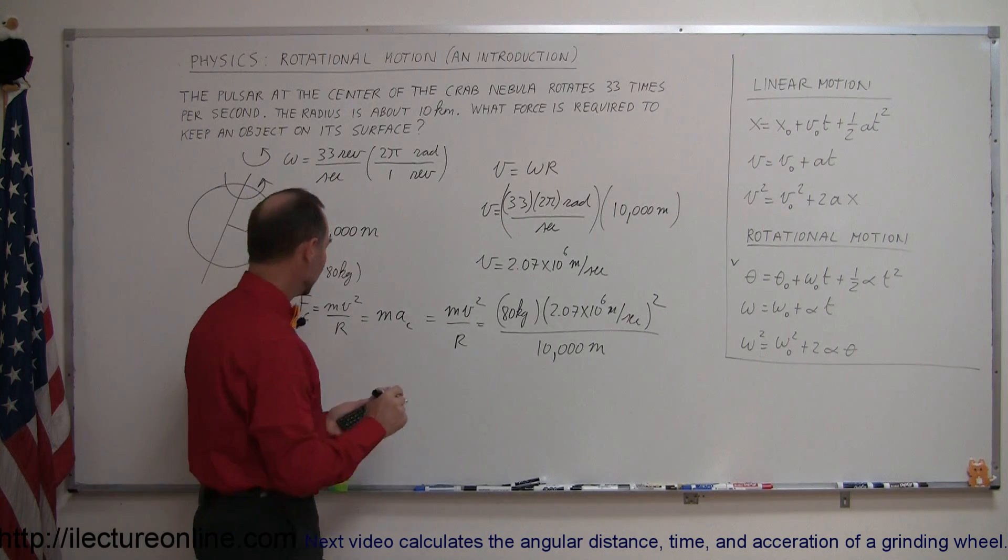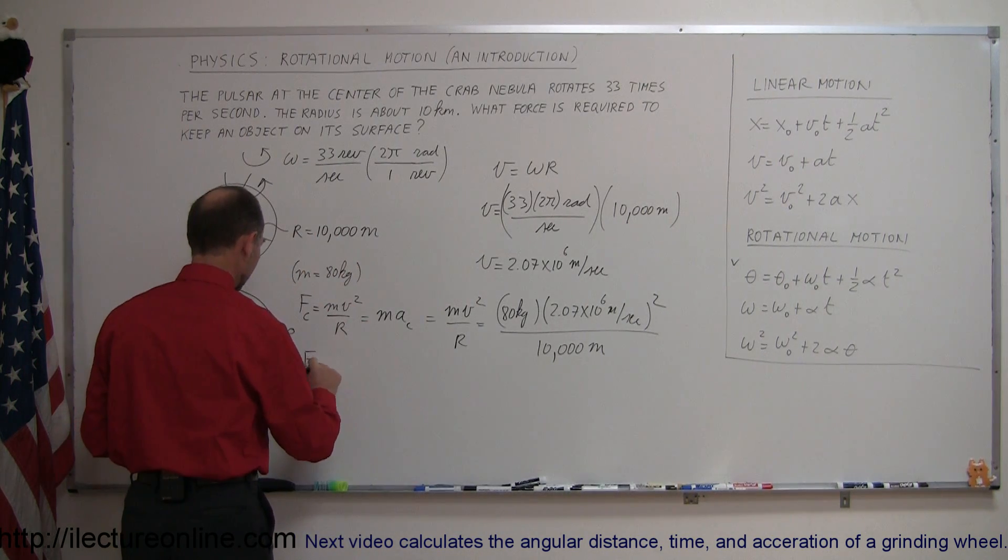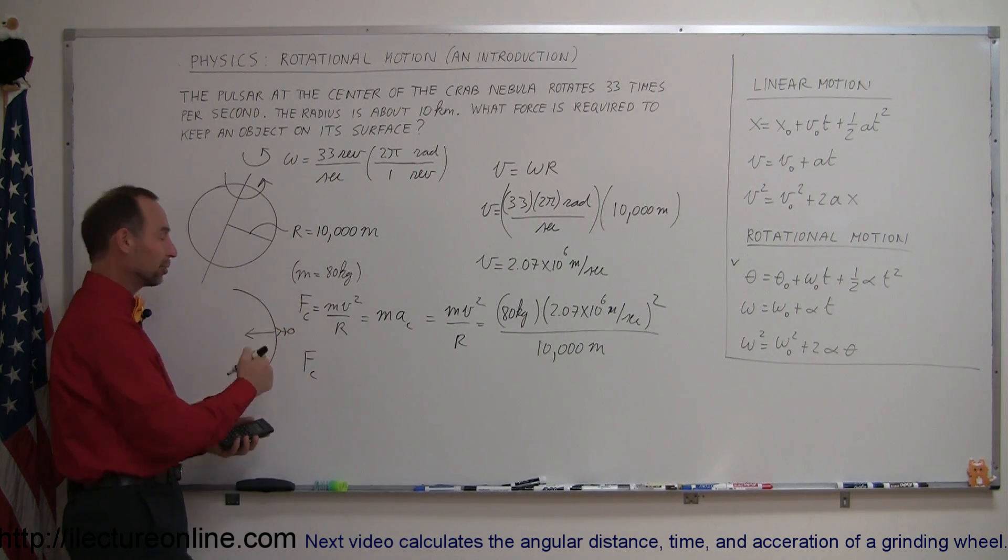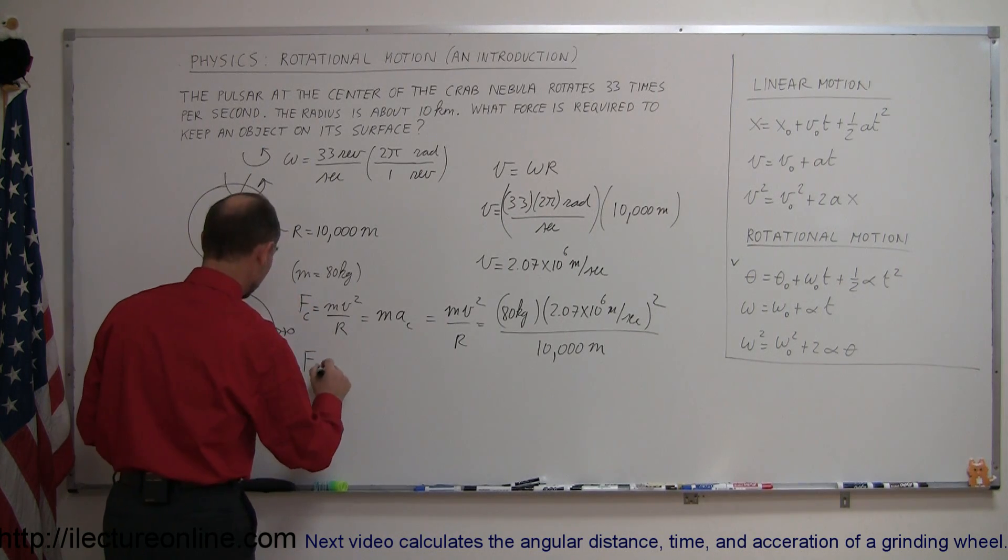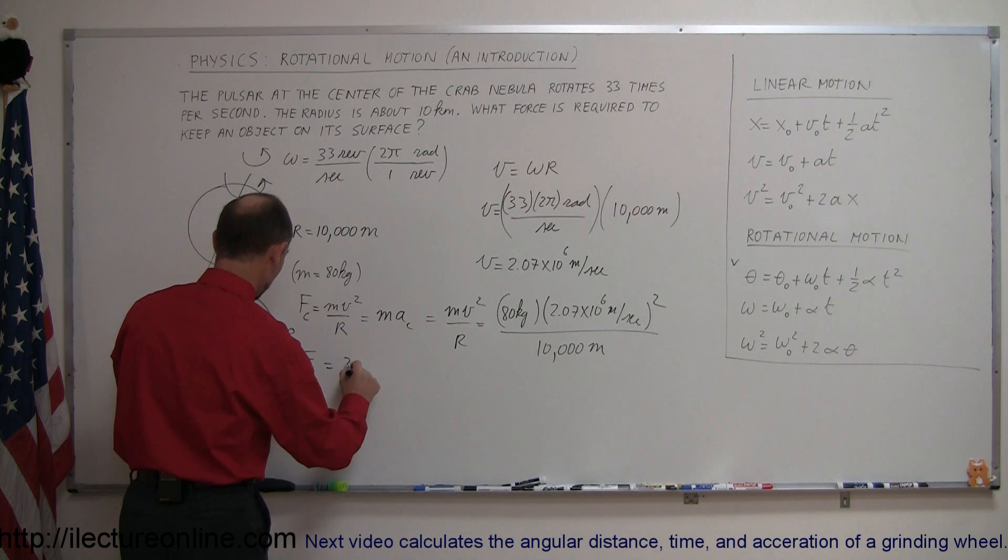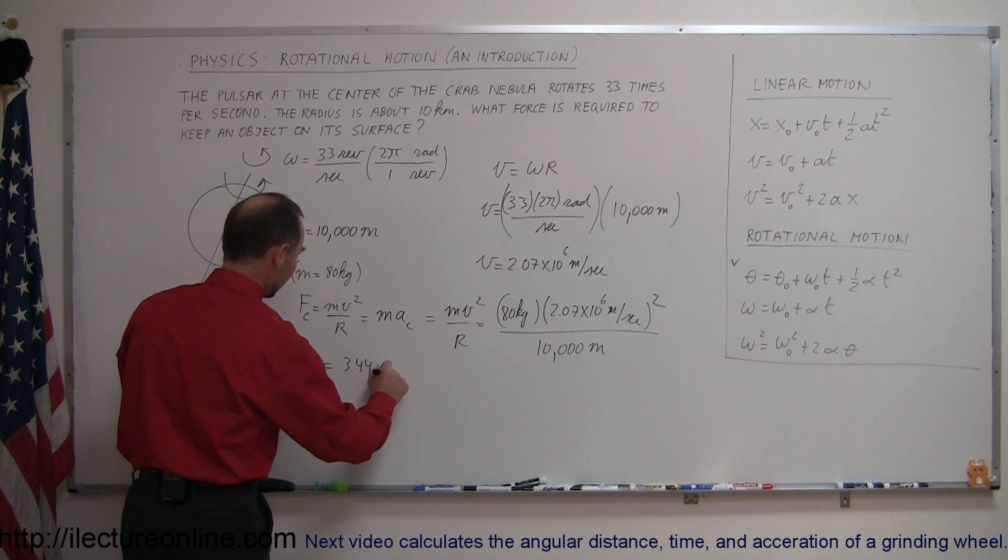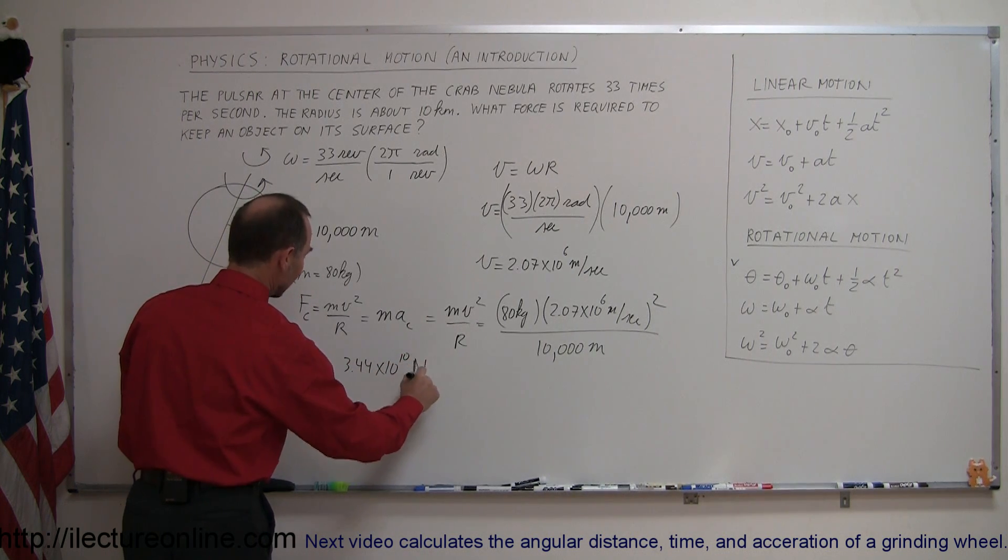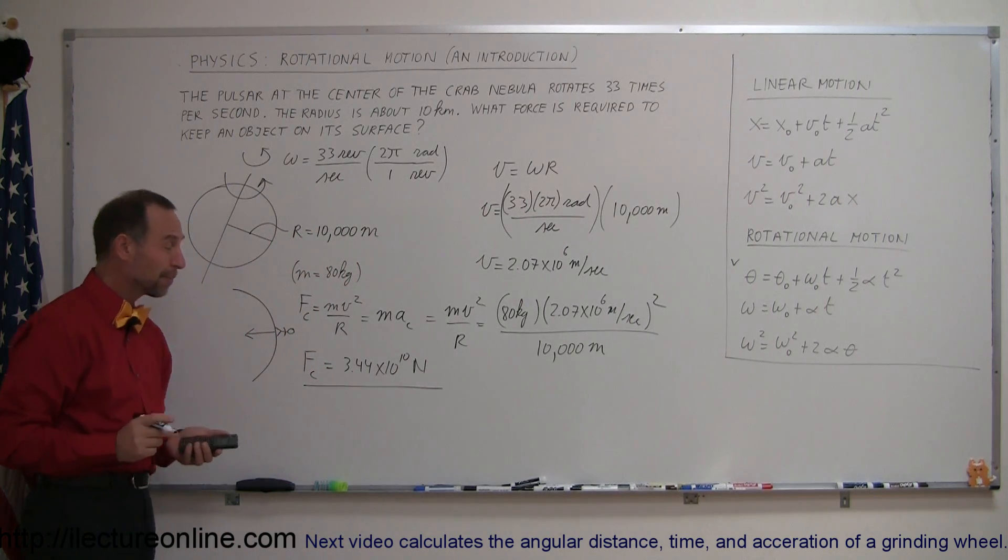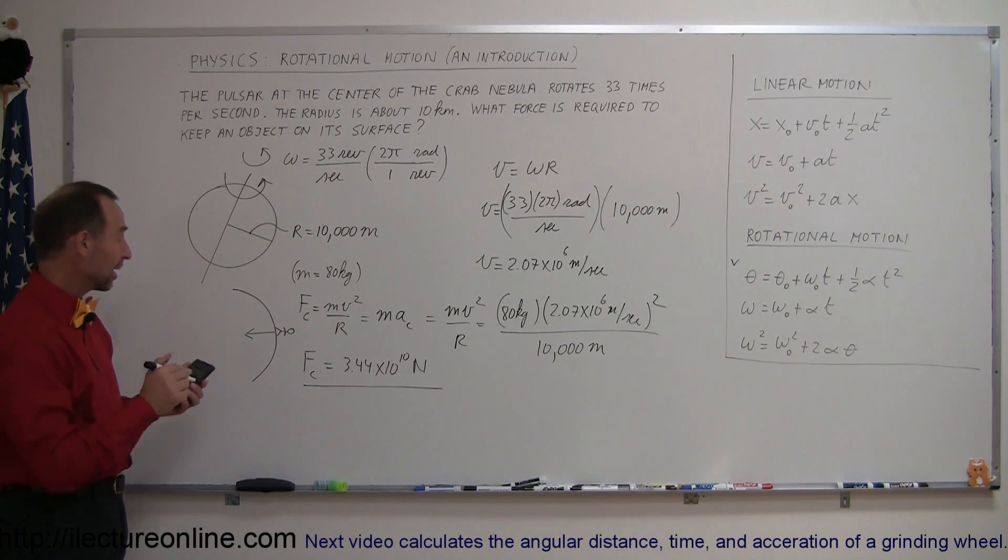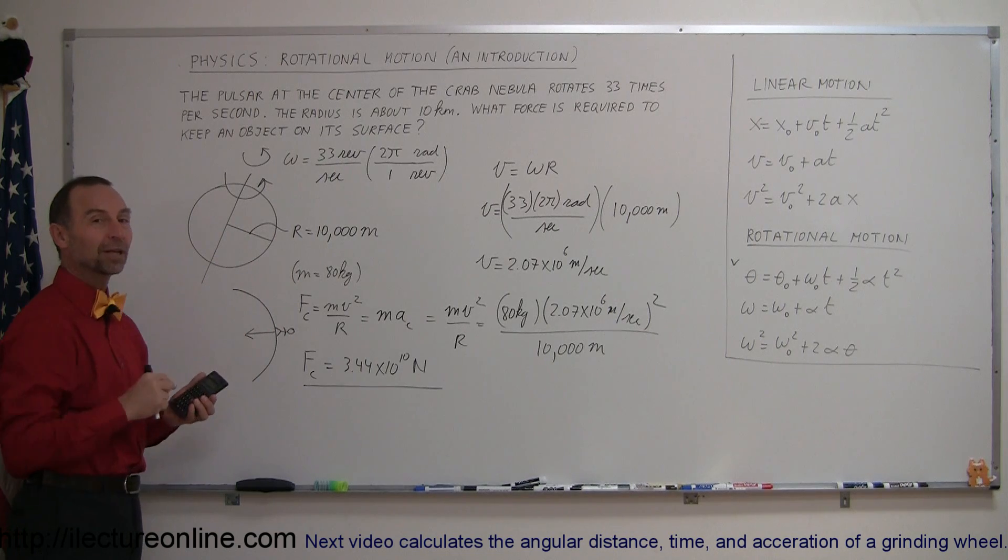And that means to keep a person from spinning off a neutron star or a pulsar that is equal to 3.44 times 10 to the tenth Newtons. So that's about 34 billion Newtons required to keep you from spinning off this fast spinning star.